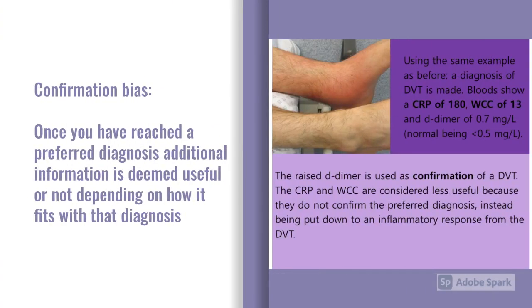Similarly, confirmation bias is where once you've reached an initial diagnosis, the rest of the information is deemed useful or not depending on how it fits with your original diagnosis. Using that same example of the erythematous leg: once you've made a diagnosis of DVT, blood tests show a very raised CRP, white cells a little raised, and a mildly raised D-dimer. You use the D-dimer as confirmation your original diagnosis is correct and deem the CRP and white cells less useful because you've anchored on that DVT.